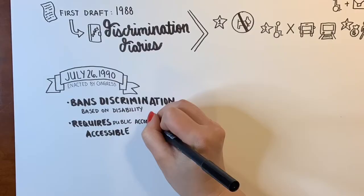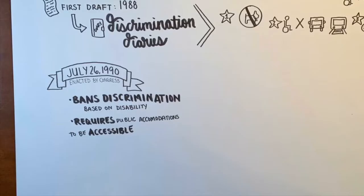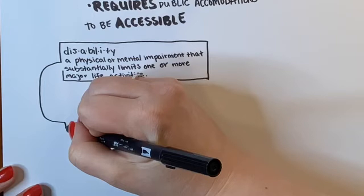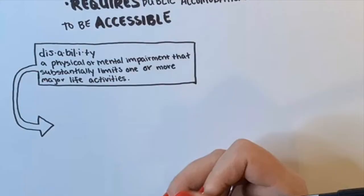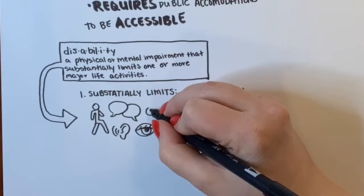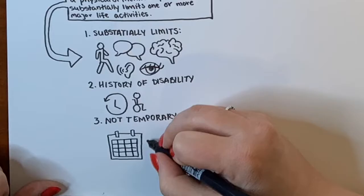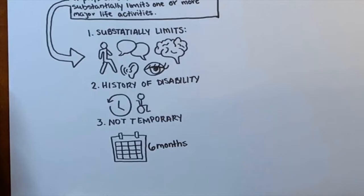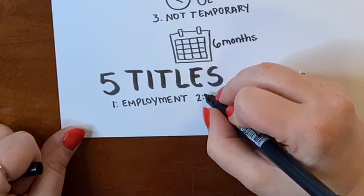The Americans with Disabilities Act was put into effect by Congress on July 26th, 1990. It bans discrimination based on disability and requires public accommodations to be accessible. The Act defines disability as a physical or mental impairment that substantially limits one or more major life activities. Covered disabilities include any condition that substantially limits a major life activity such as walking, talking, hearing, seeing, or learning; people with a history of disability such as cancer in remission; or any impairment that is not temporary or expected to last longer than six months.